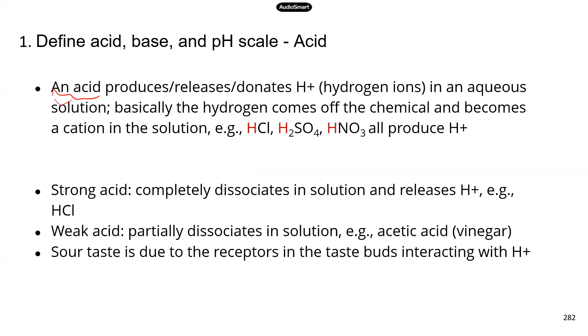So an acid is something that produces, releases, or donates a hydrogen ion. That's the key. Anything that can release a hydrogen ion in aqueous solution is probably an acid. And what happens is the hydrogen can come off the chemical and becomes a cation in the solution. Remember, a cation is a positive ion, and the hydrogen ion is positive.